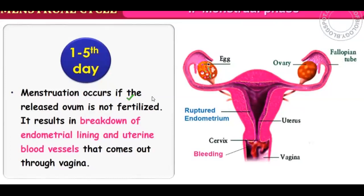When fertilization has not occurred, the uterine wall breaks. The uterus strengthens over 28 days so it can carry the embryo. If pregnancy has not occurred, there is no need for it to remain strong, so the uterine layer breaks and comes out. But if pregnancy occurs, the uterus must remain strong. Menstruation only occurs if the egg is not fertilized.